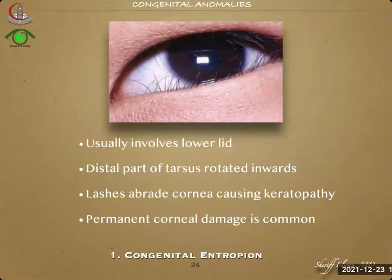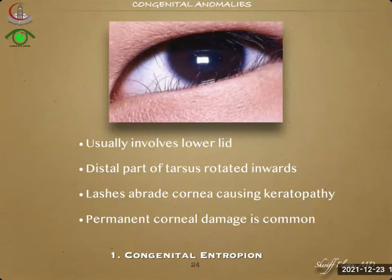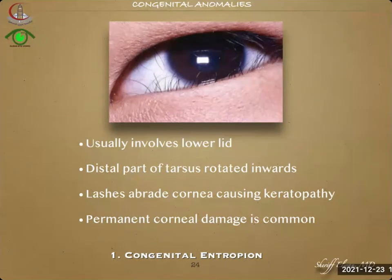Congenital entropion usually involves the lower lid, where the distal part of the tarsus is rotated inwards and the lashes are corrosive to the cornea, causing keratopathy. Permanent corneal damage is common; however, in young individuals, the lashes are so soft that there are often no corneal implications, and the condition can be watched until corrected if the patient is younger than one year.